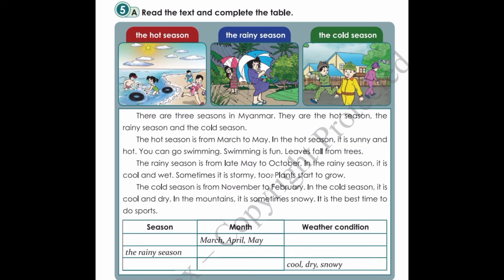Track 31, Exercise 5A: Read the text and complete the table. There are three seasons in Myanmar. They are the hot season, the rainy season and the cold season. The hot season is from March to May. In the hot season, it is sunny and hot. You can go swimming. Swimming is fun. Leaves fall from trees.